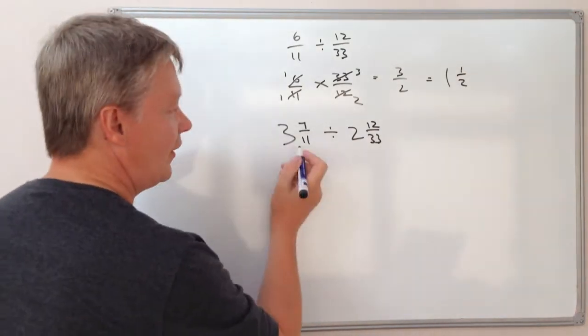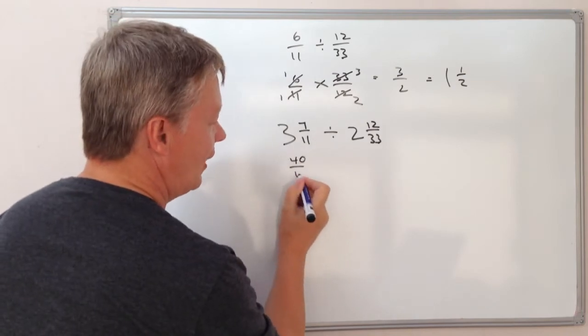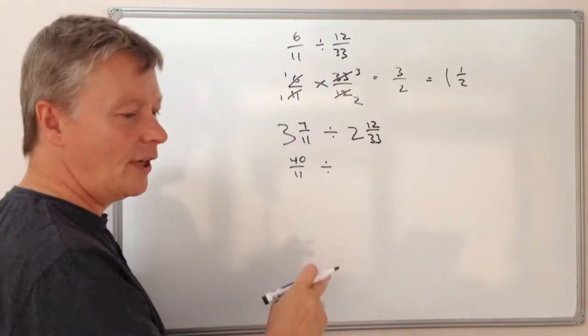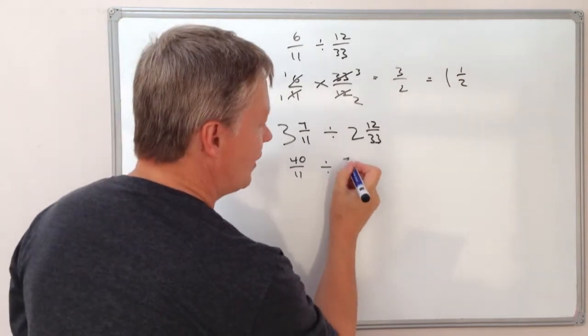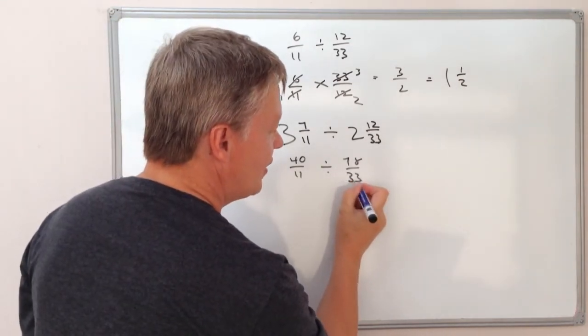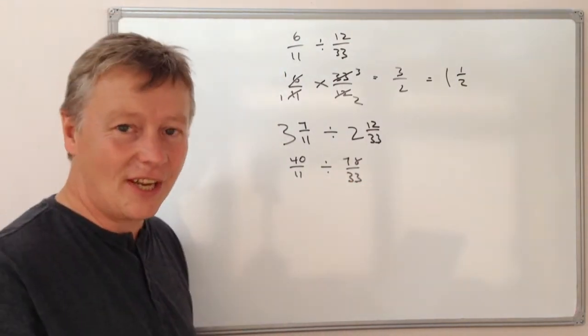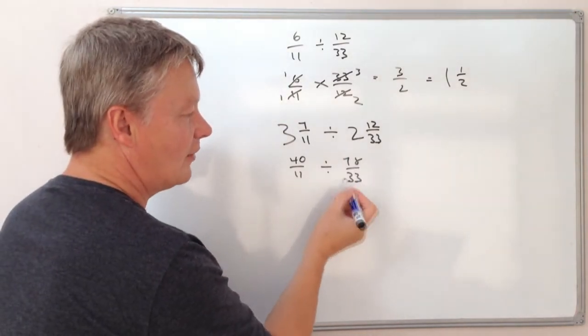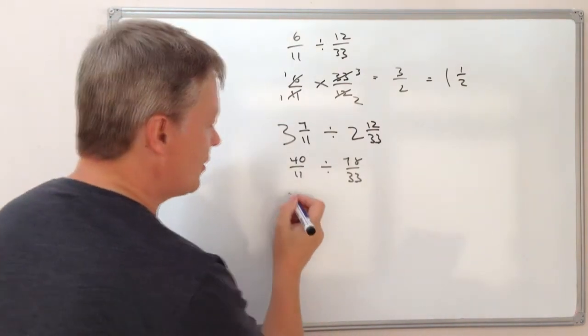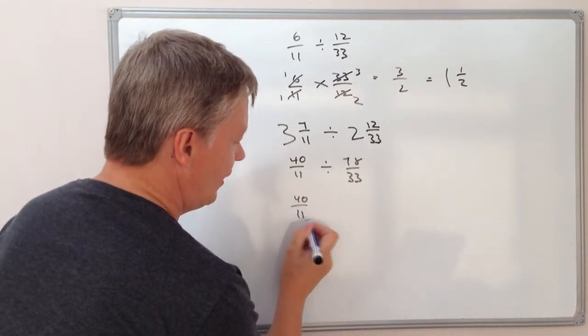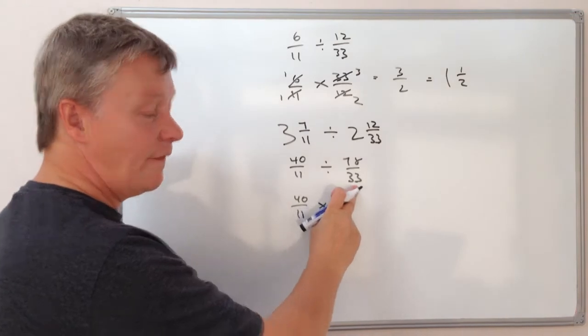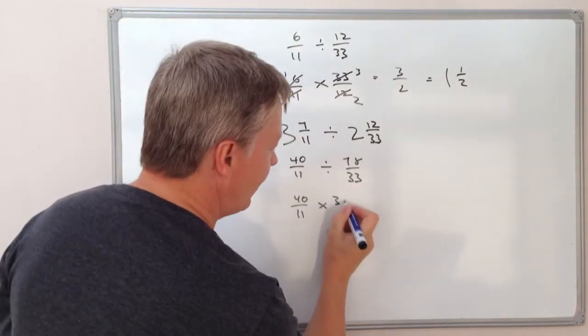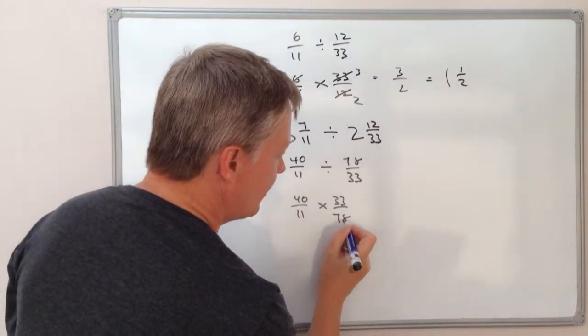So if I convert that I'm going to get 40 over 11 and that's going to be divided by, I'm going to convert this and it's going to give me 78 over 33. And exactly the same way that I did here, what I'm going to do is turn this around and multiply it. So it's going to be 40 over 11 and that's going to be multiplied by the flip of that which is 33 over 78.